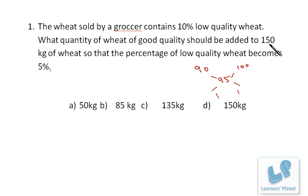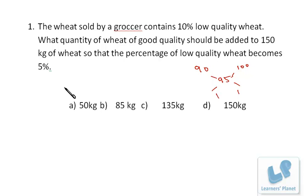So if we already have 150 kilograms of wheat at 90% good quality, we further need 150 kilograms of 100% good quality wheat to make the low quality wheat 5%. So 150 kilograms is your answer. I hope you are getting me.